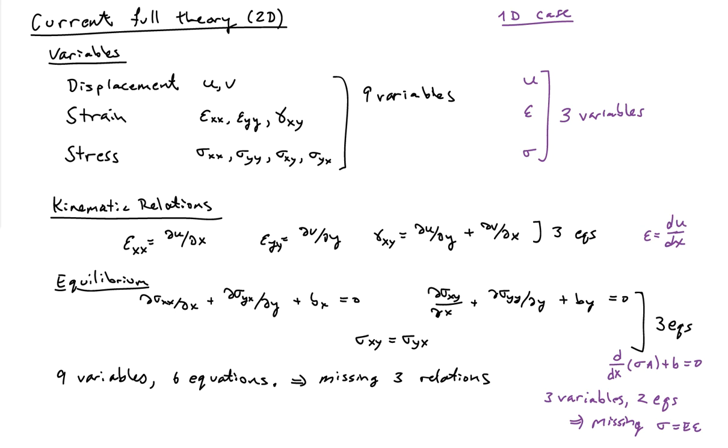There was one kinematic relationship, which told us that the strain is equal to the derivative of the displacement with respect to position. And then there was one equilibrium equation, that the derivative of sigma A plus B equals zero.